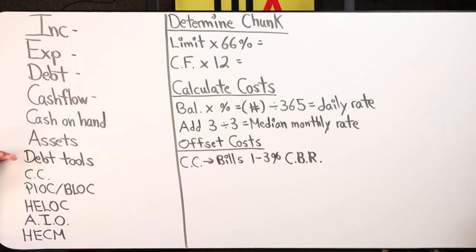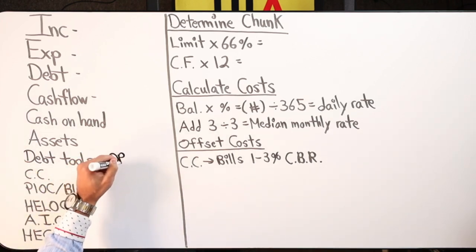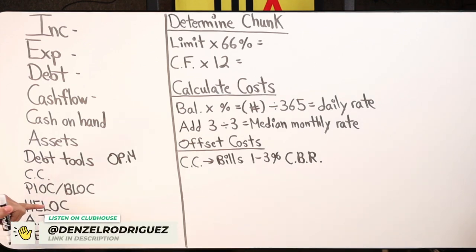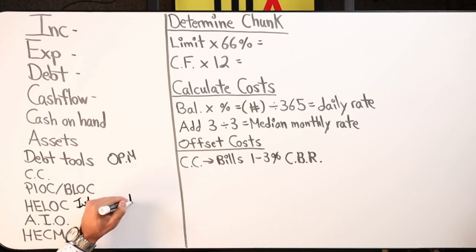A debt tool is something that we can use under OPM, other people's money, or in this case, the bank's money, through a credit card, either personal or business, a personal, unsecured, revolving line of credit, what's short is PLOC, or business line of credit, B-LOC. These can either be secured or unsecured.